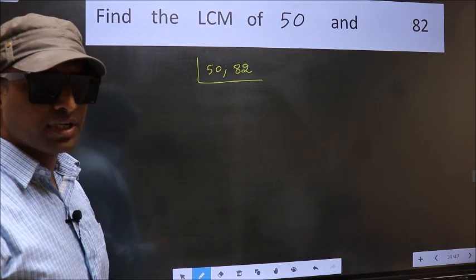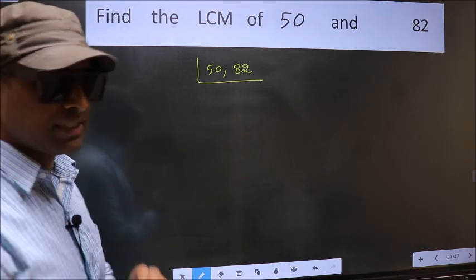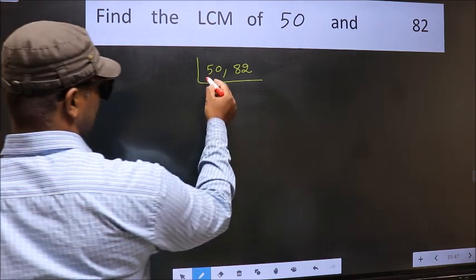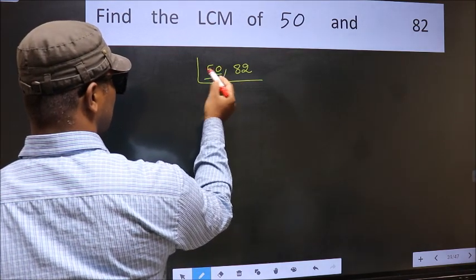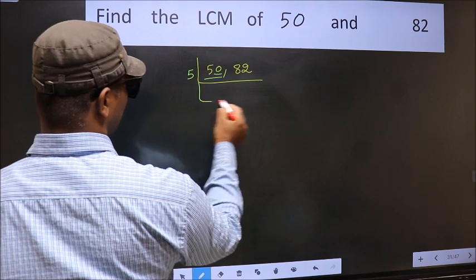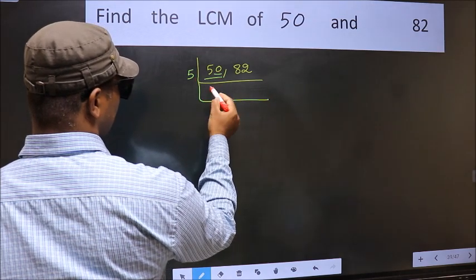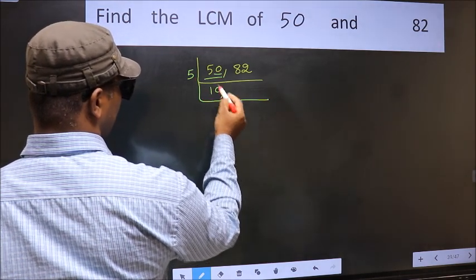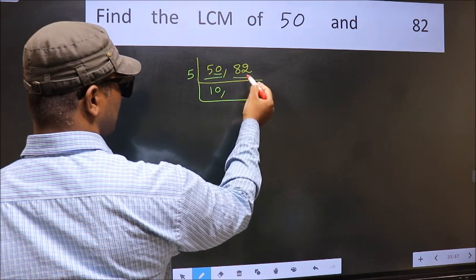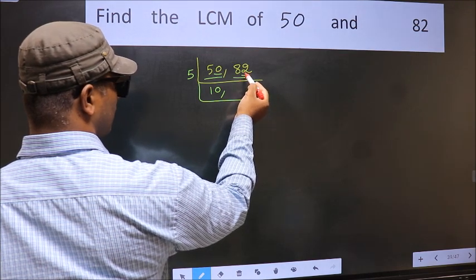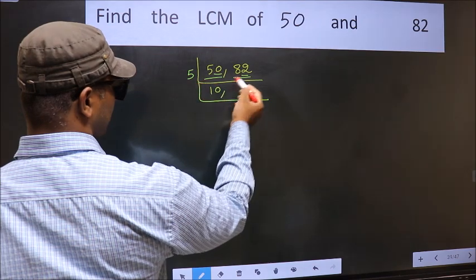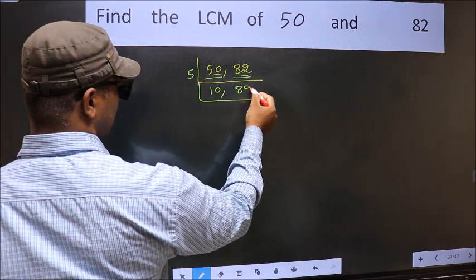Now you should focus on the first number, which is 50 here. For this number, last digit is 0, so take 5. When do we get 50 in 5 table? 5 times 10 is 50. The other number, 82, last digit is neither 0 nor 5, so this is not divisible by 5. So we write it down as it is.